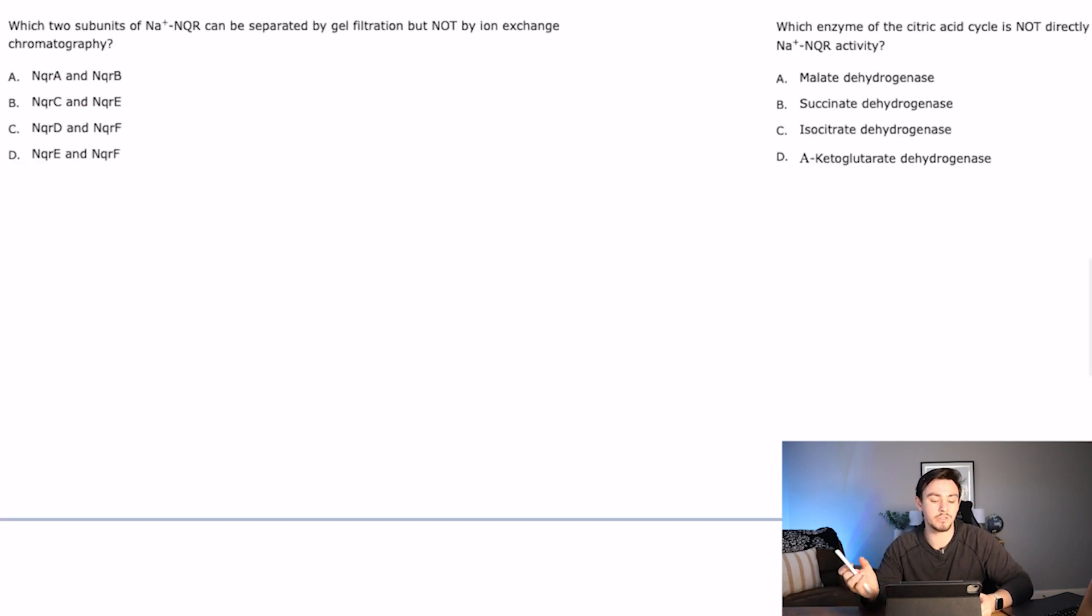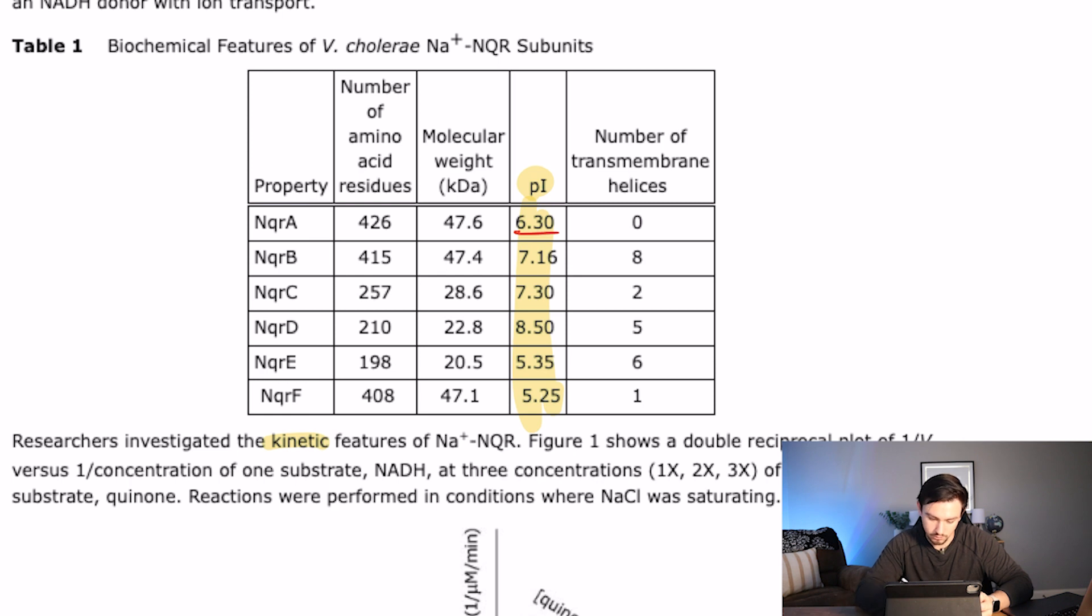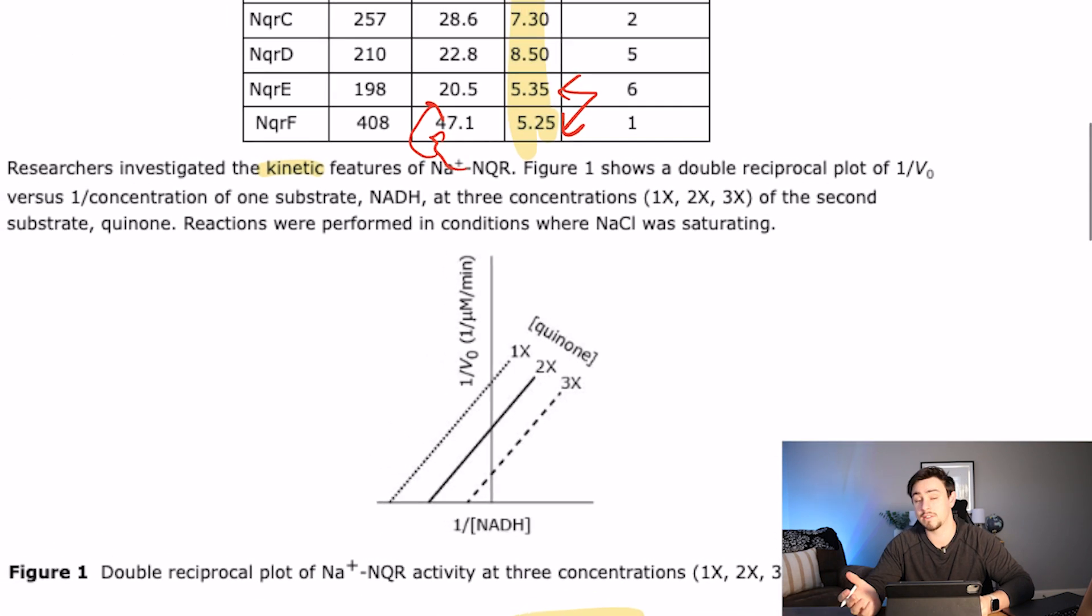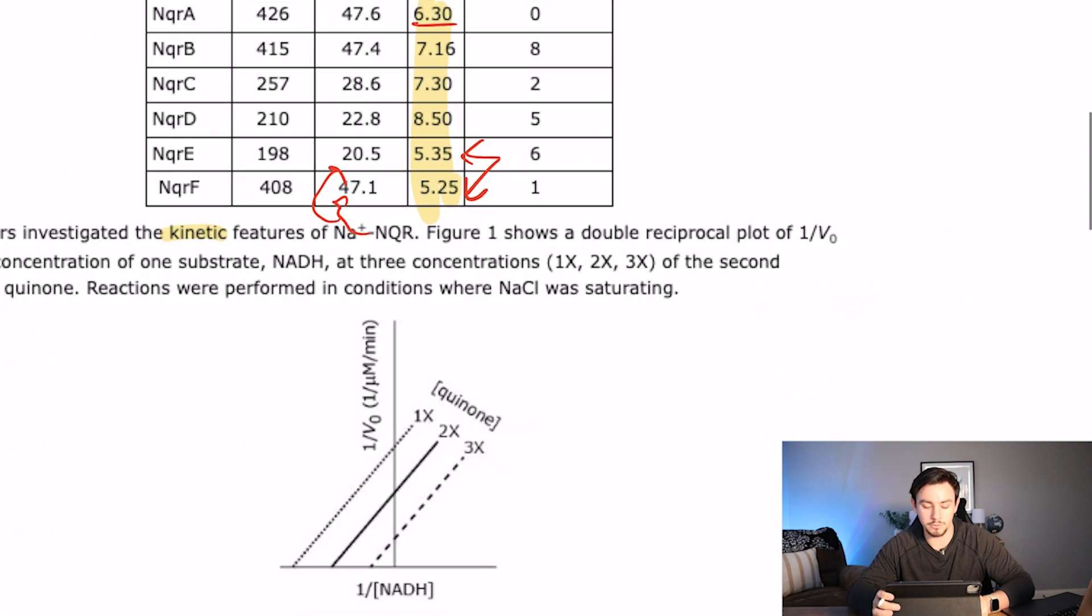Number next is which two subunits of sodium NQR can be separated by gel filtration, but not by ion exchange chromatography. So how did these things separate? Gel filtration can separate by mass. Ion exchange can separate by charge. So we're going to say which of these is very close or identical in charge, but pretty different in mass. Let's go and look. So we have the two that are closest in charge. We're probably looking at these two. And then are they pretty different in mass? Well, yeah, one is literally double the size of the other. So let's see if we have an answer choice for E and F. And in fact, we do. So I won't go through all those because that one's pretty straightforward. But that's the difficult part is rephrasing that question just like most of the MCAT.